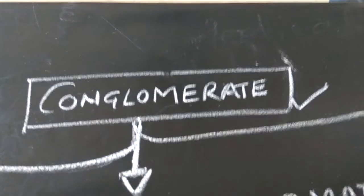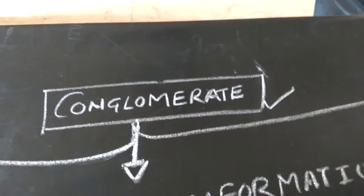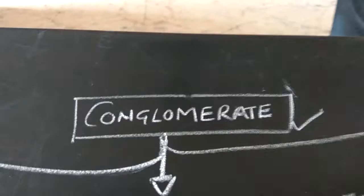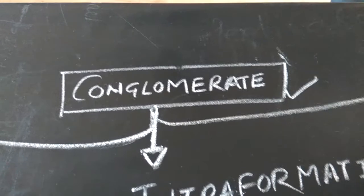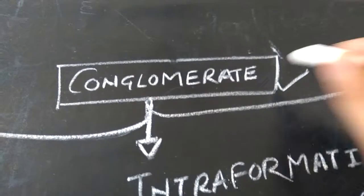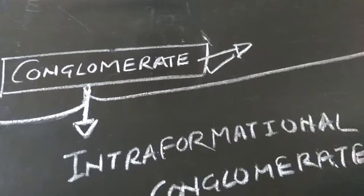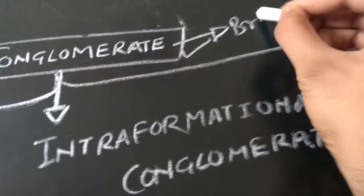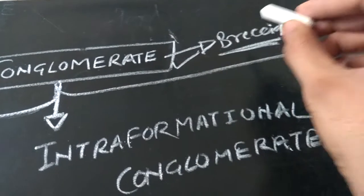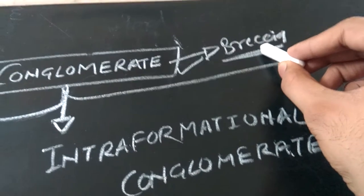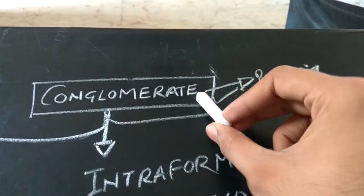This lecture is based on the classification of conglomerate. Conglomerate is a rudaceous sedimentary rock composed of rounded pebbles. Its angular equivalent — the rock composed of angular fragments — is known as breccia. Breccia is indicative of less transport of the pebbles, whereas conglomerate indicates well-rounded pebbles.